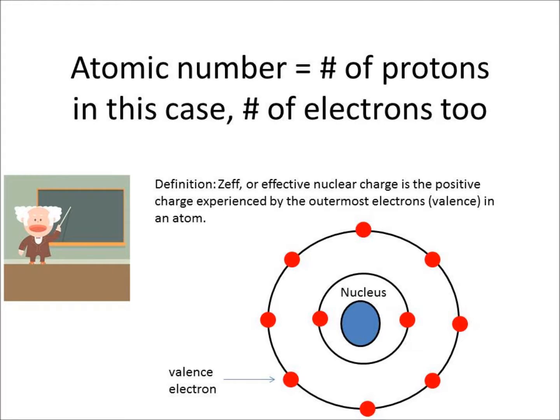Atomic number corresponds to how many protons, and because these aren't ions, how many electrons an atom has. The effective nuclear charge, by definition, is the positive charge experienced by the outermost electrons in an atom, which are called valence electrons.